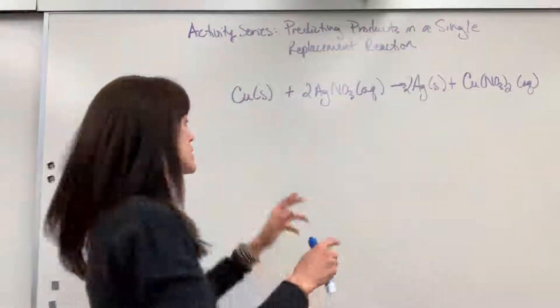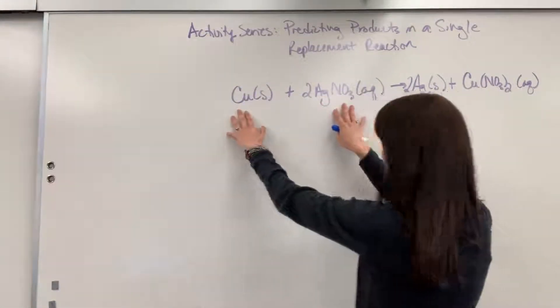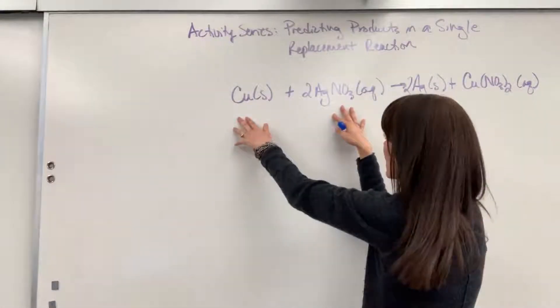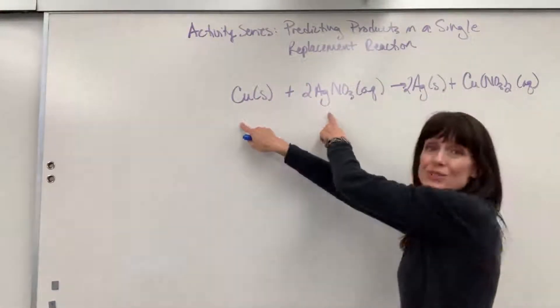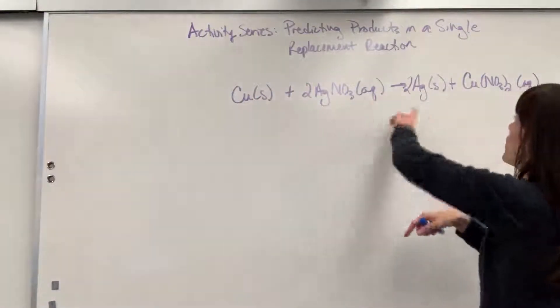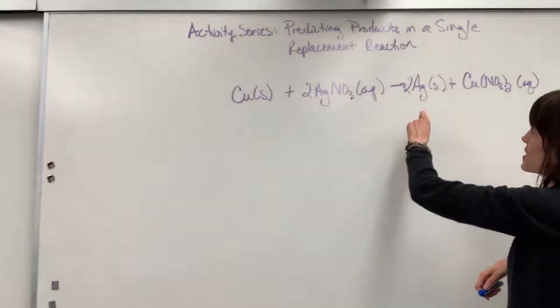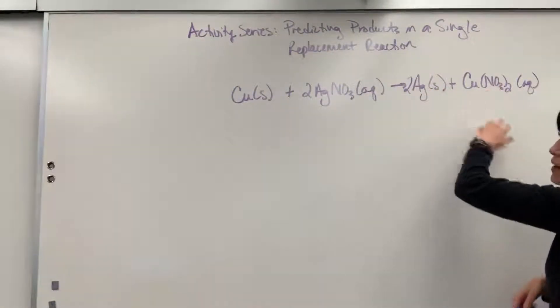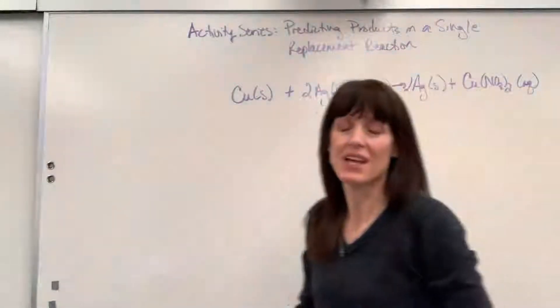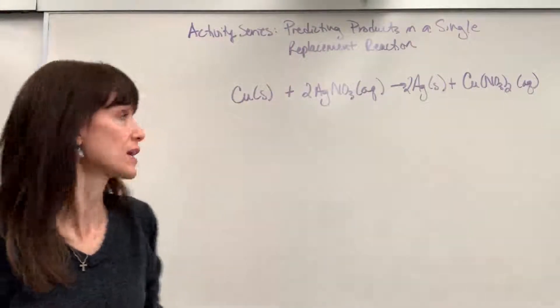Watch where these metals go. I have copper by itself, silver attached to the nitrate compound, and they're going to switch places. Now the silver is by itself and the copper is on the compound. That's your single replacement reaction.